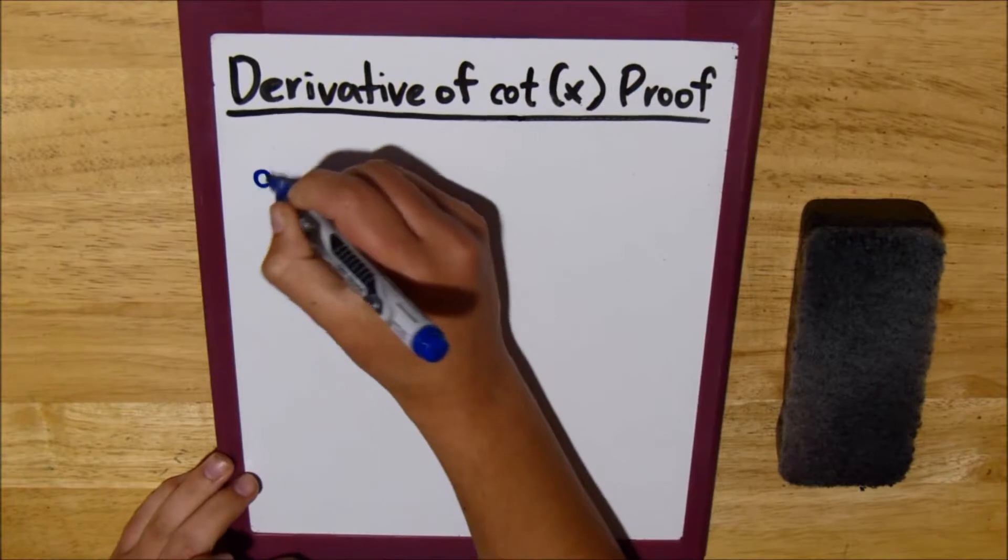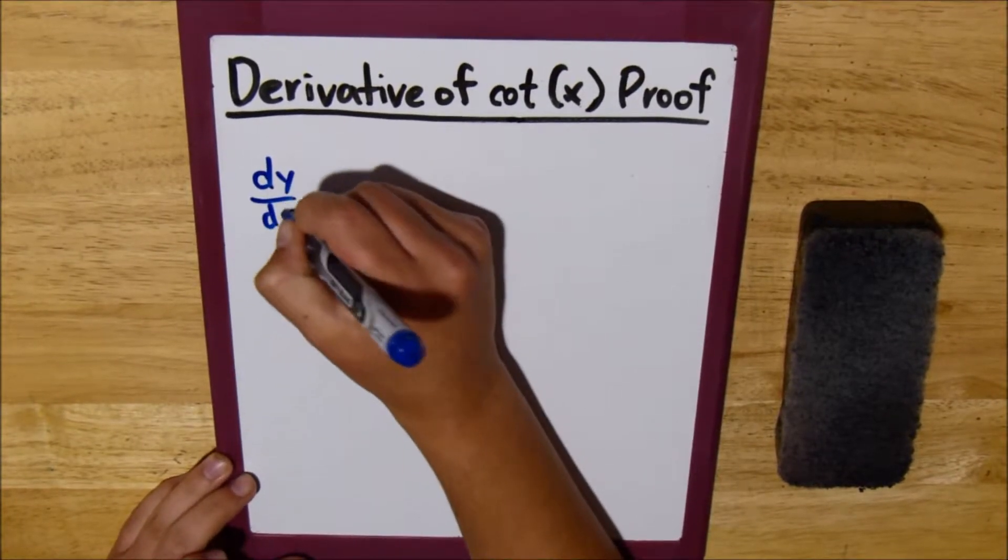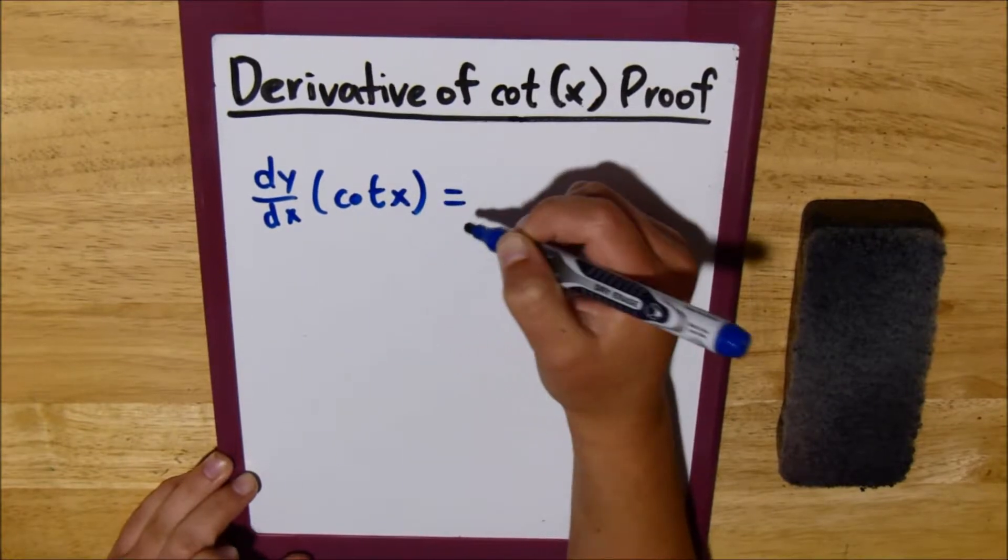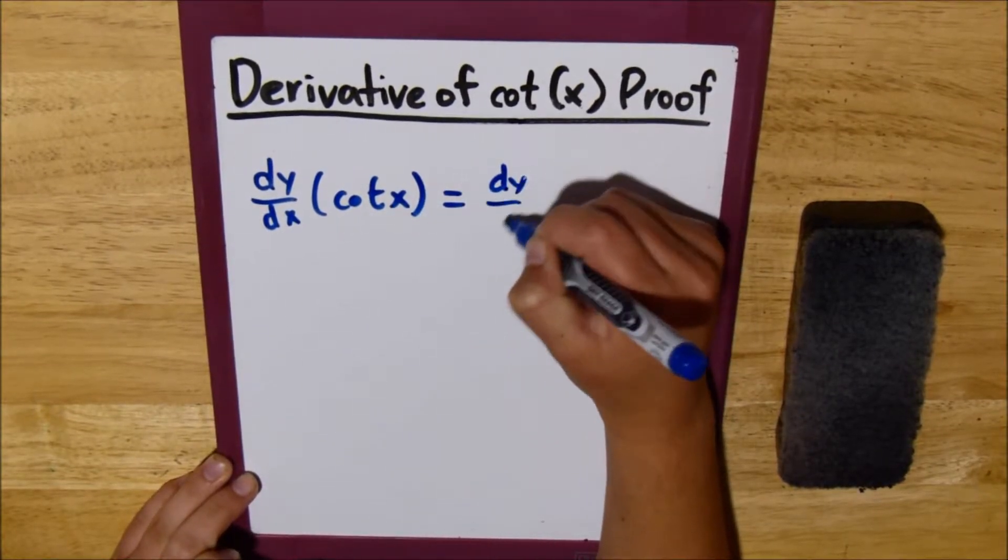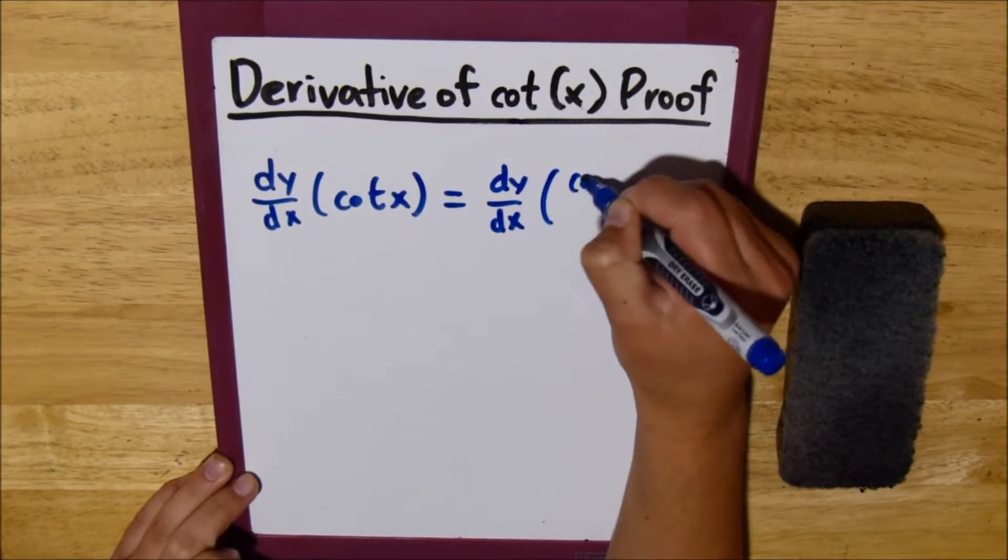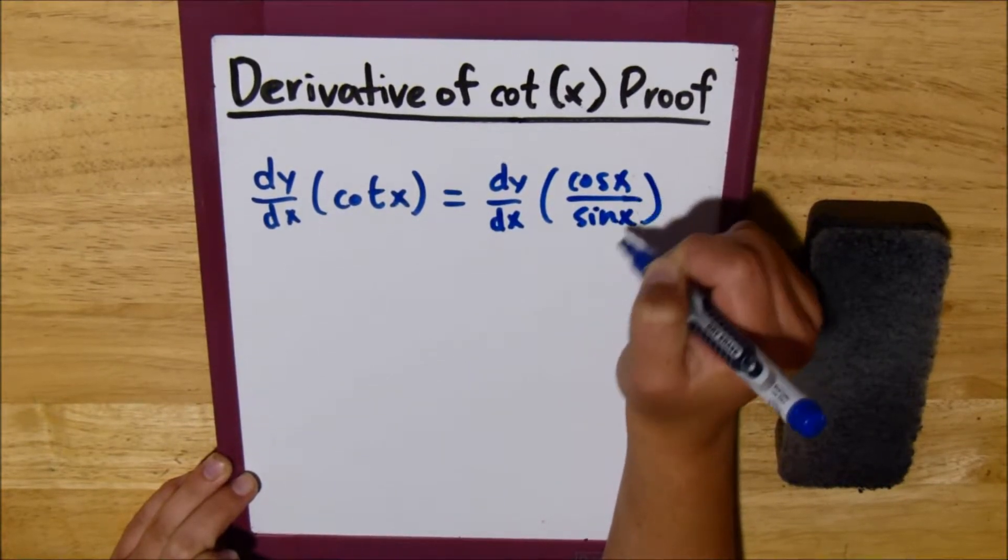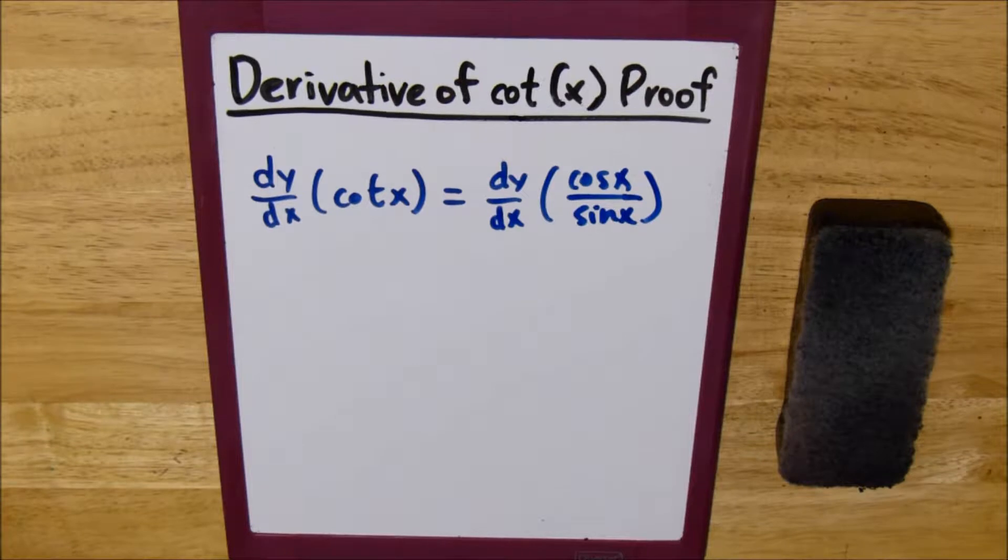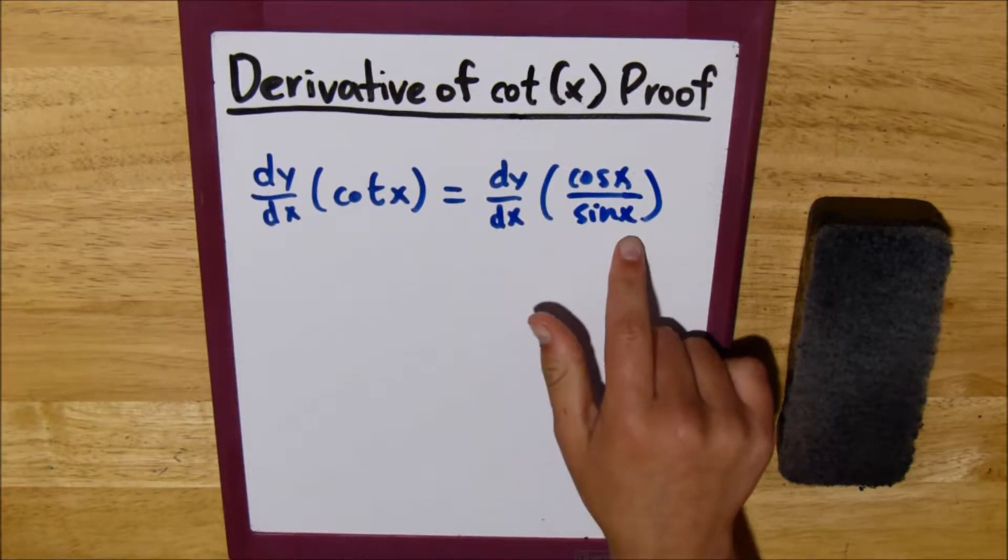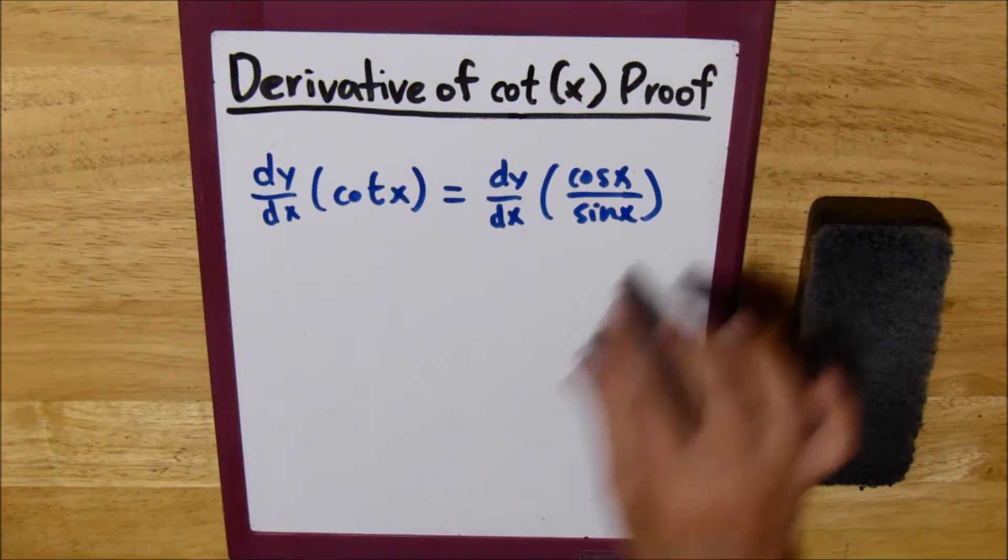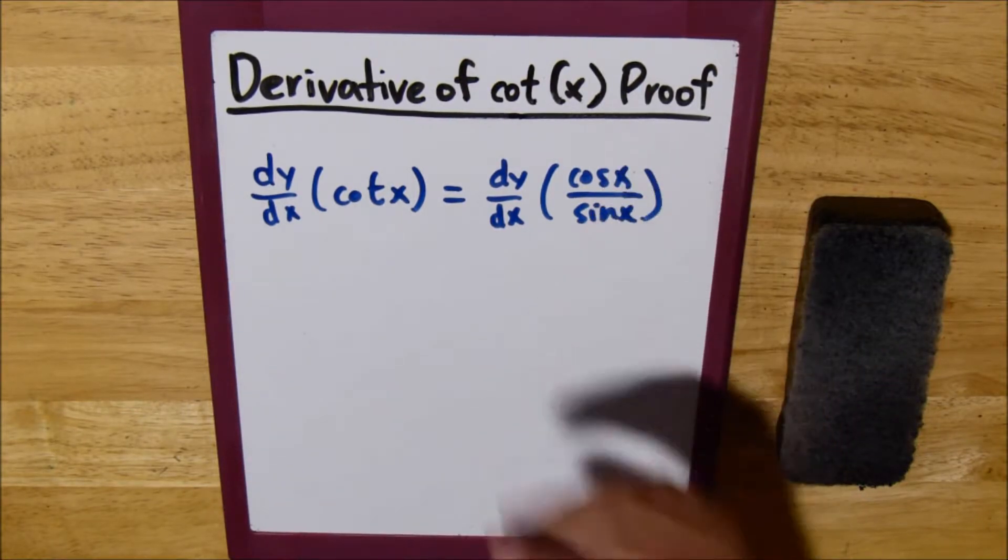We can write the derivative of cotangent of x as the derivative of cosine x over sine x. The reason I know this is because tangent of x is sine x over cosine x. And because cotangent of x is 1 over tangent of x, we can just flip the sine and cosine to get this.